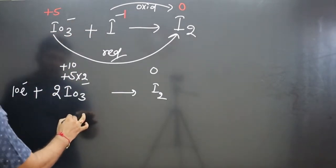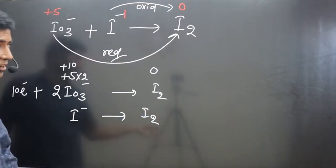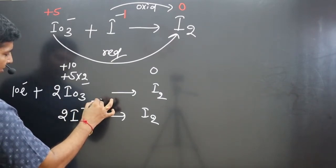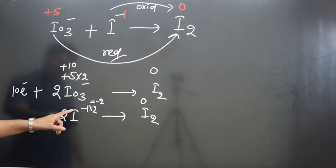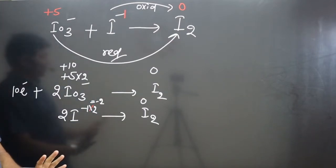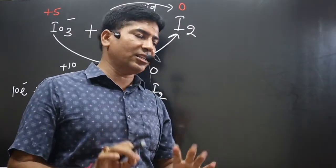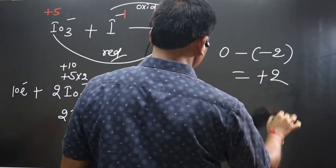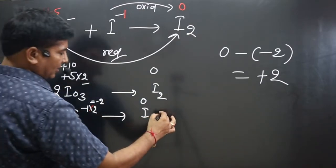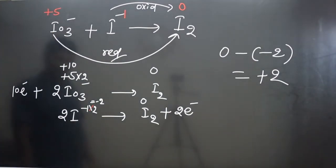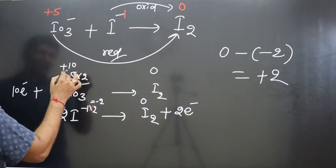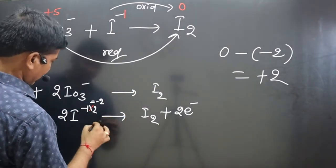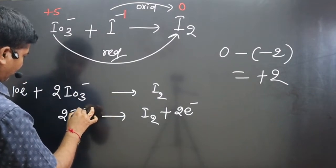For the oxidation half-reaction: I⁻ on the left, I₂ on the right. Balance atoms first — multiply I⁻ by 2. One iodine is −1, so two iodines give −2; on the right I₂ is 0. The difference is 0 − (−2) = +2. Since this is an oxidation reaction, we add 2 electrons to the right side of the equation. We can then remove the oxidation number annotations as the charge is now balanced.